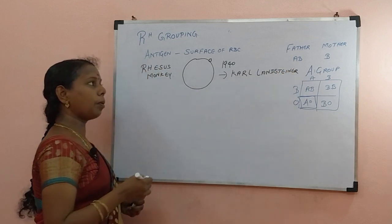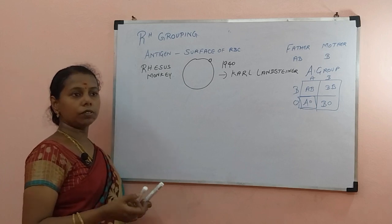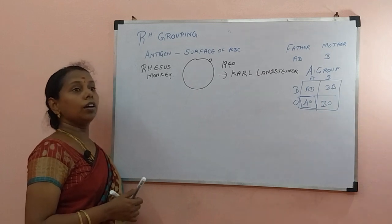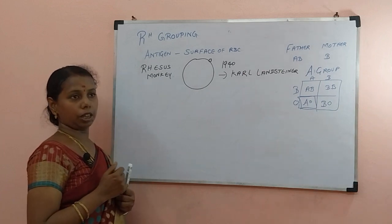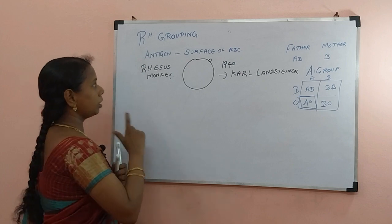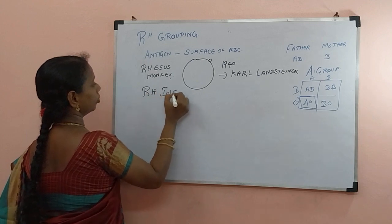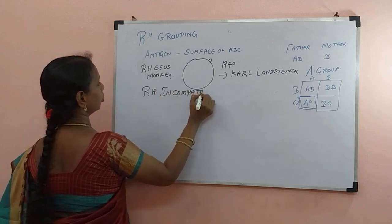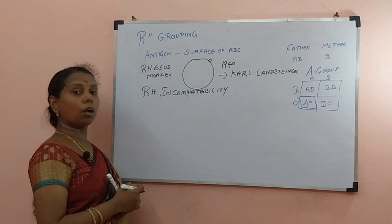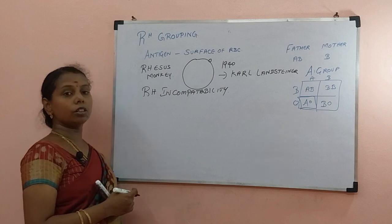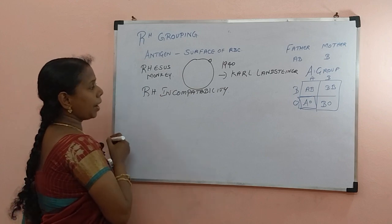What happens if an A positive person receives O positive? Nothing will happen. But if an A positive person receives AB positive, then clumping will happen. That is related to RH incompatibility — the non-matching of the RH antigen. A positive person should receive only positive blood.